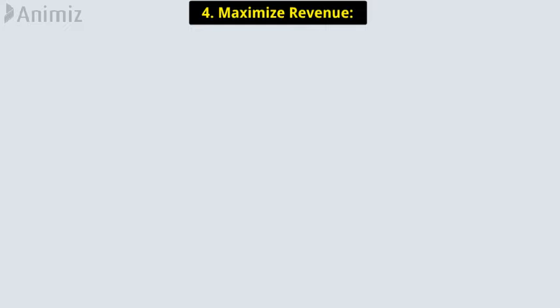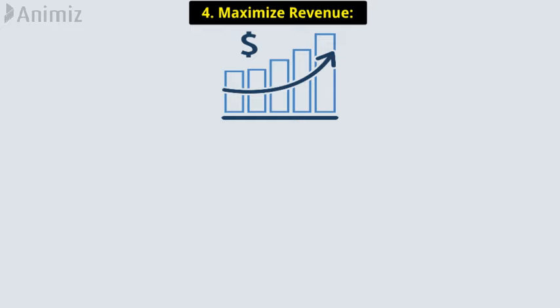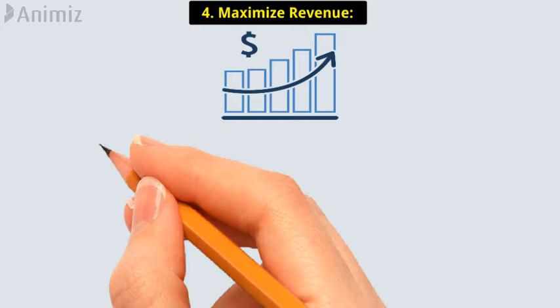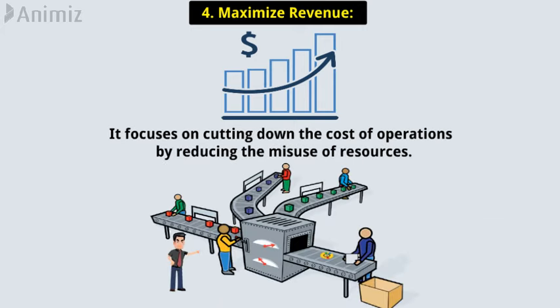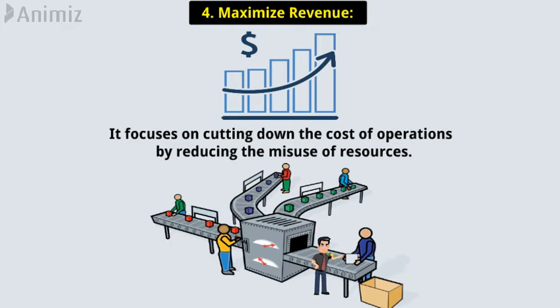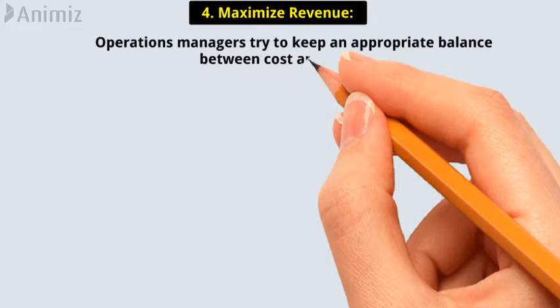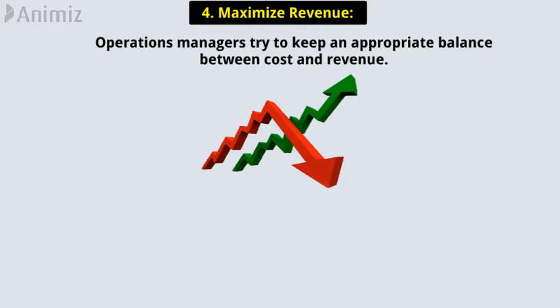4. Maximize Revenue. Operational management directly affects the profitability of the organization. It focuses on cutting down the cost of operations by reducing the misuse of resources. Operations managers review every production activity and take all significant steps for maintaining productivity in the organization. Operations managers try to keep an appropriate balance between cost and revenue.